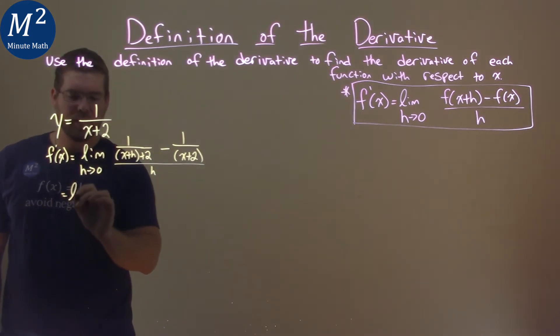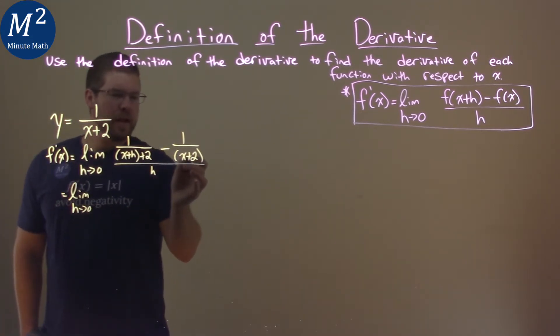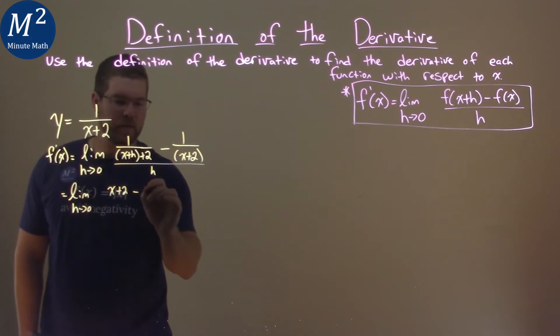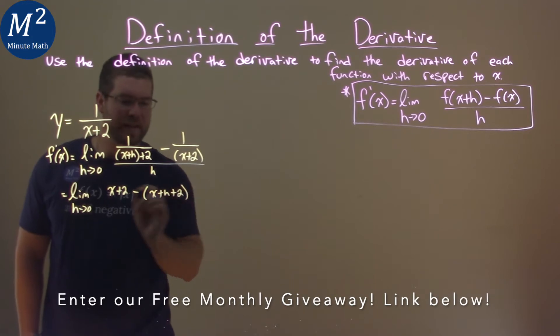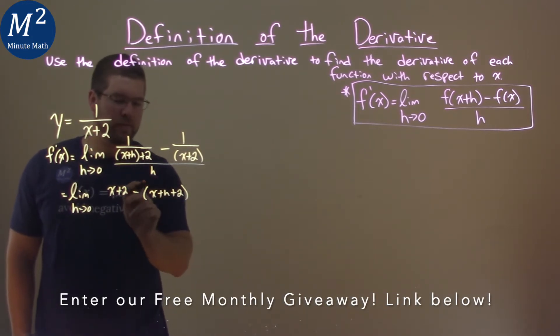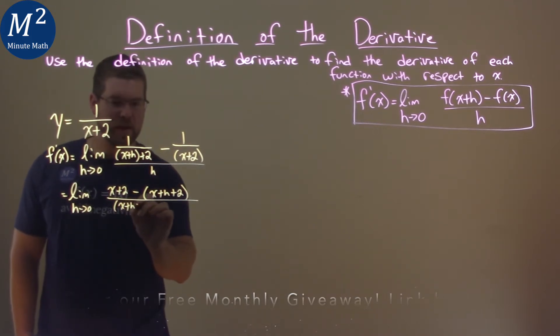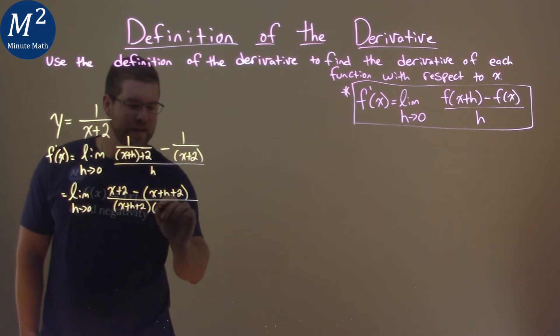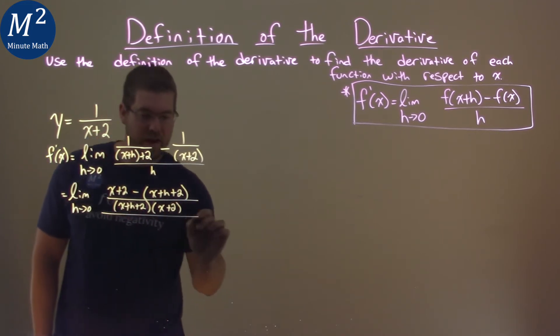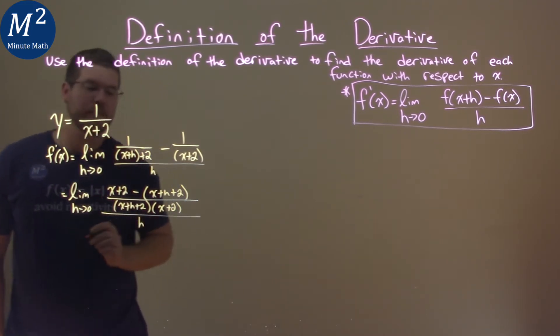So again, keep writing the limit because we haven't taken it yet. We're going to multiply x plus 2 by this numerator, so we've got x plus 2 up here, and then it's going to be subtracted by the denominator of the first part, x plus h plus 2. That's going to be all over the combined denominator, x plus h plus 2 times x plus 2, and all of that is over h.